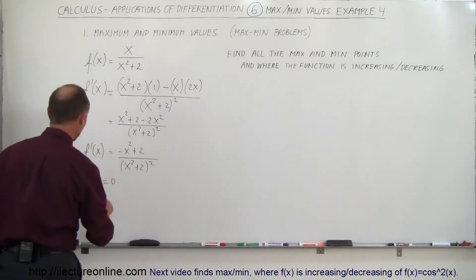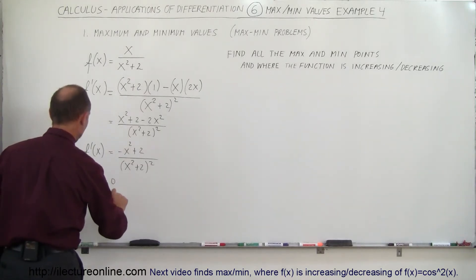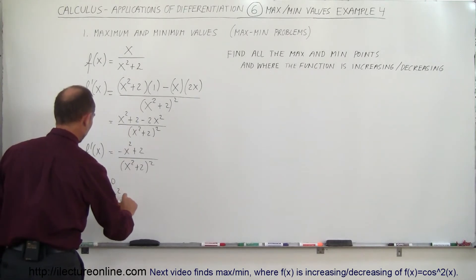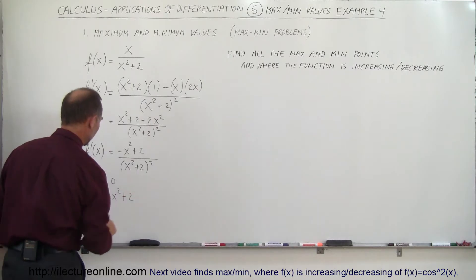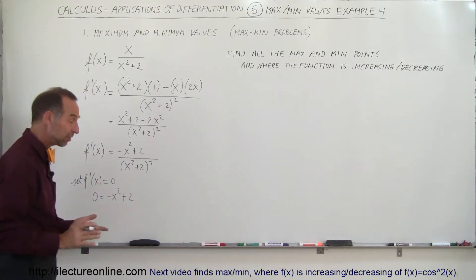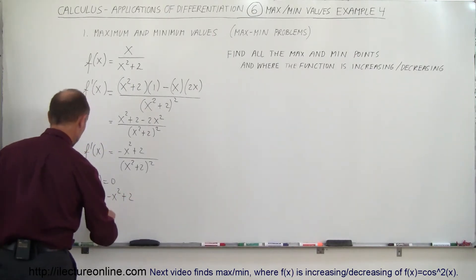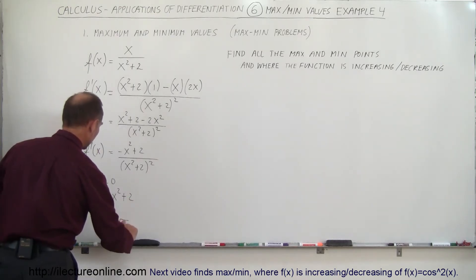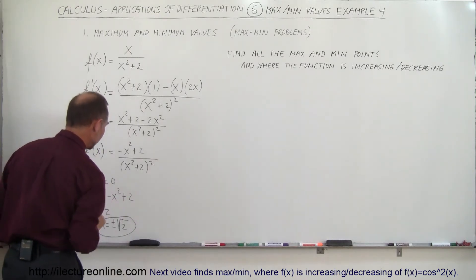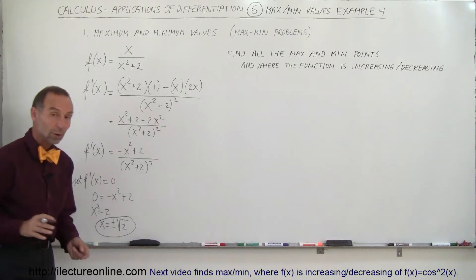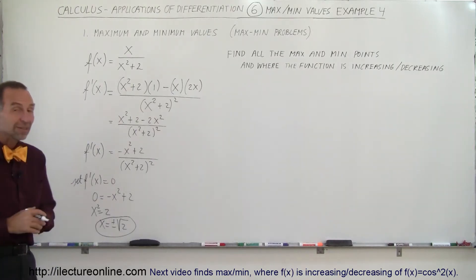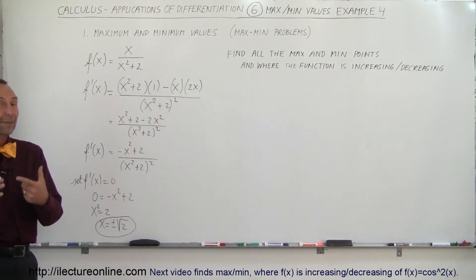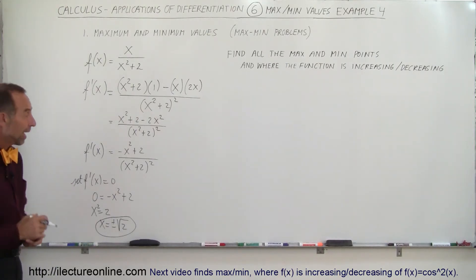So it's sufficient to say 0 equals minus x squared plus 2. Solving that for x, we get x squared equals 2, or x equals plus or minus the square root of 2. Those are two possible values for x where the slope is going to be 0, which means there we're going to find a max or a min value.